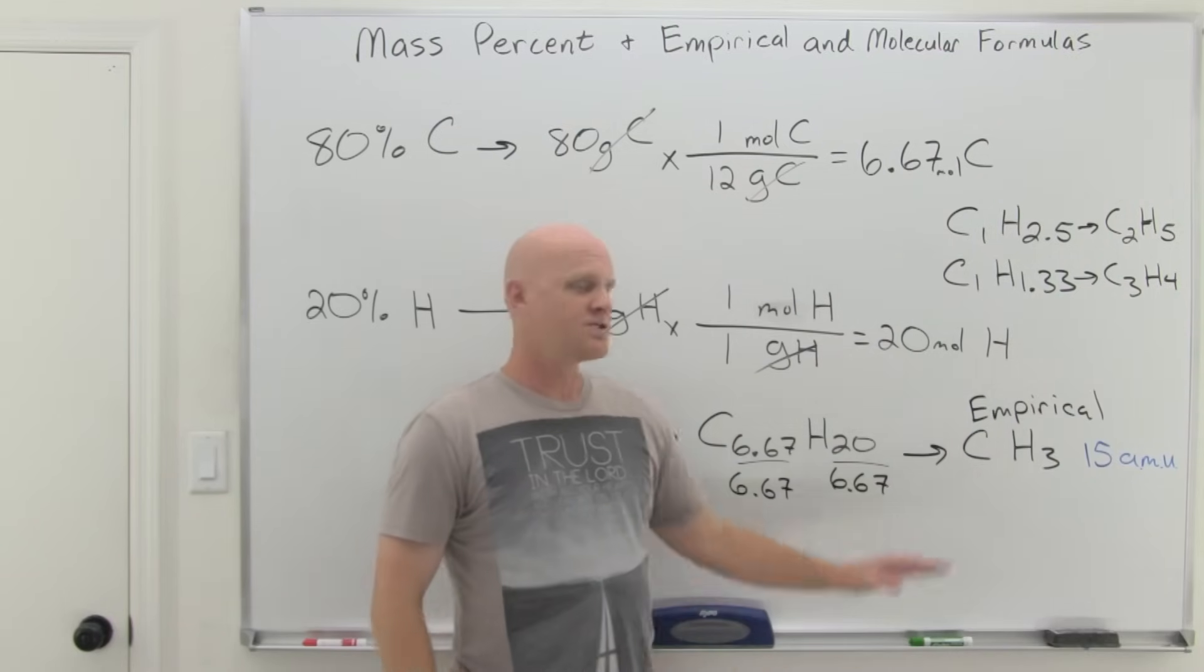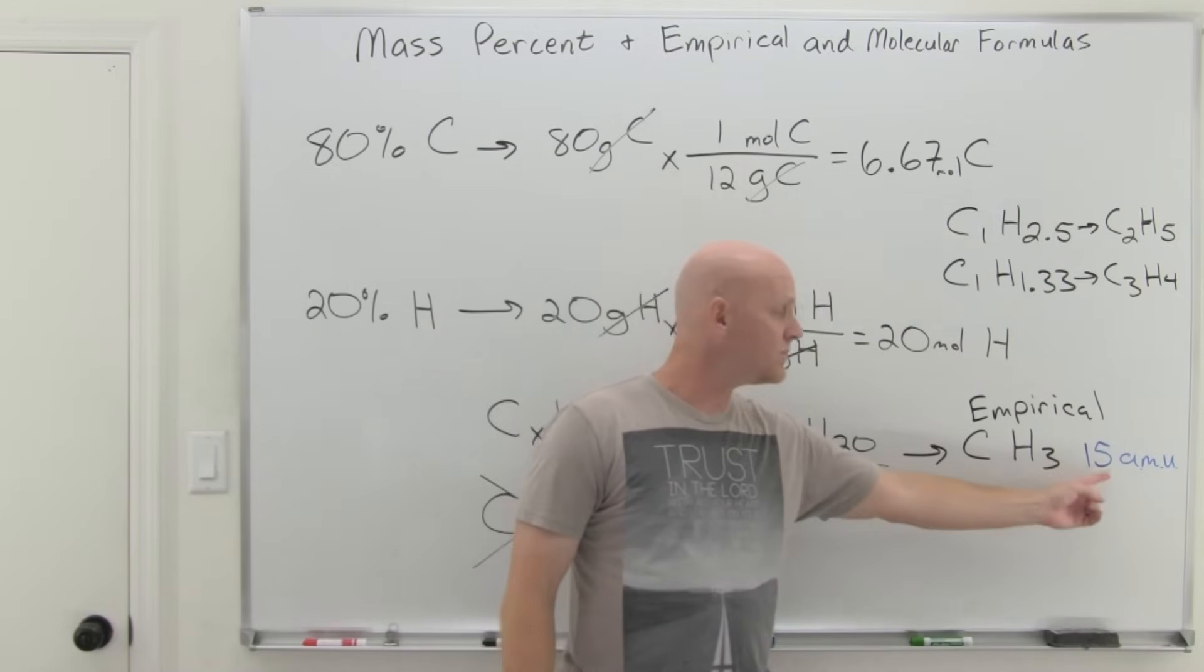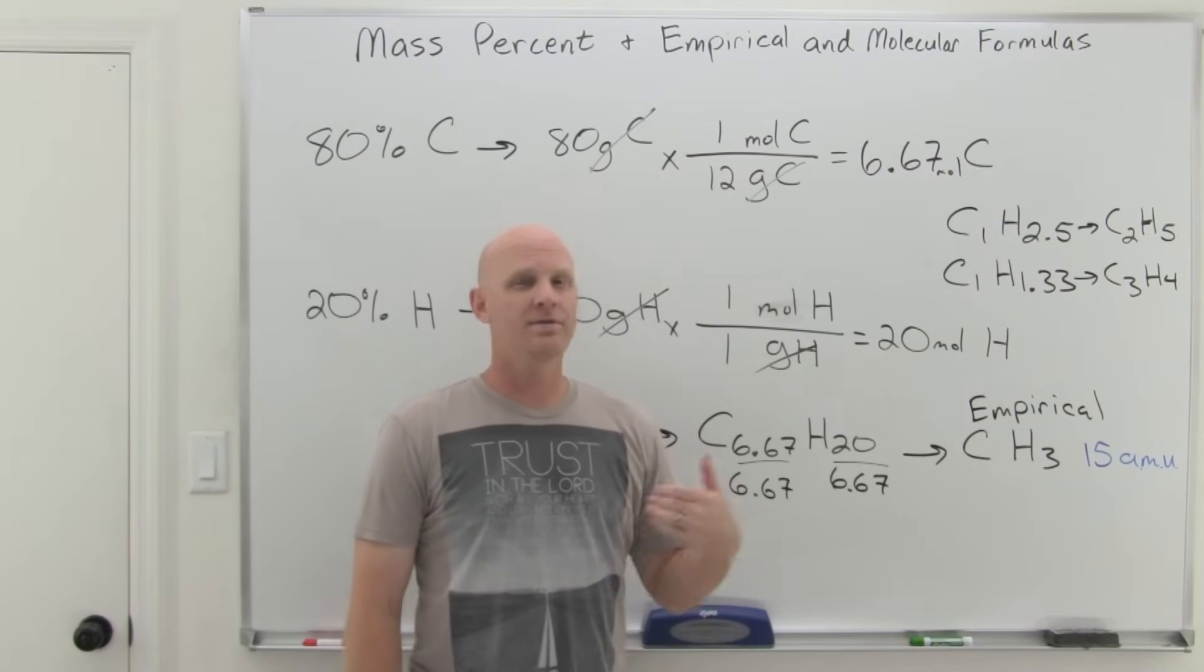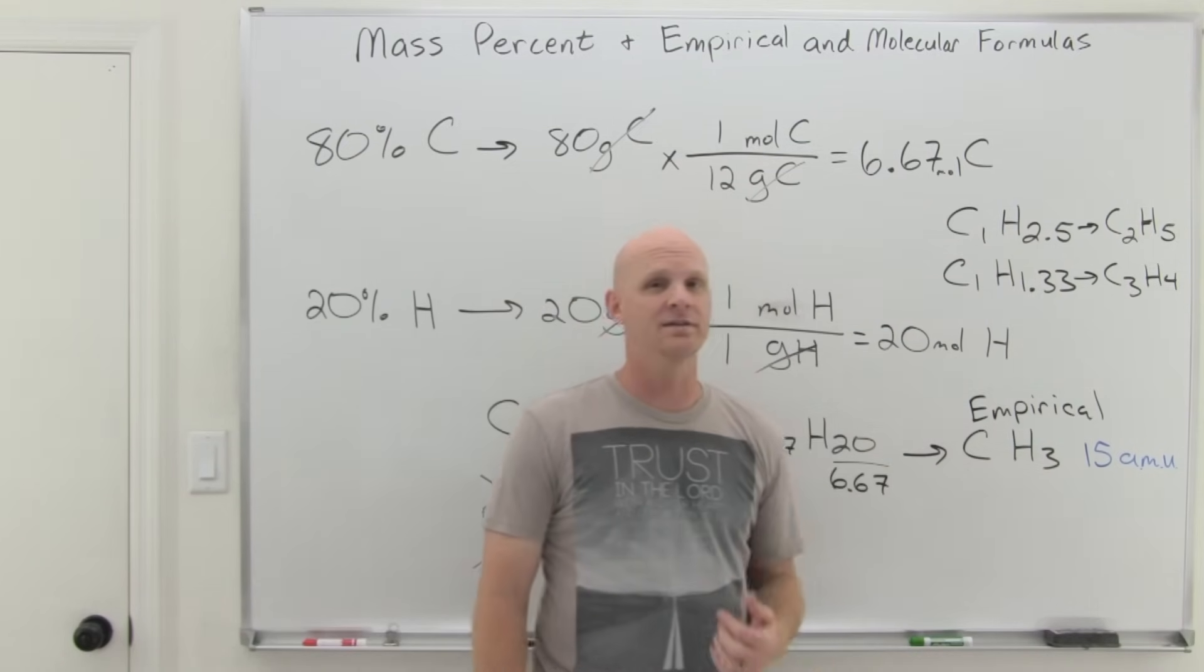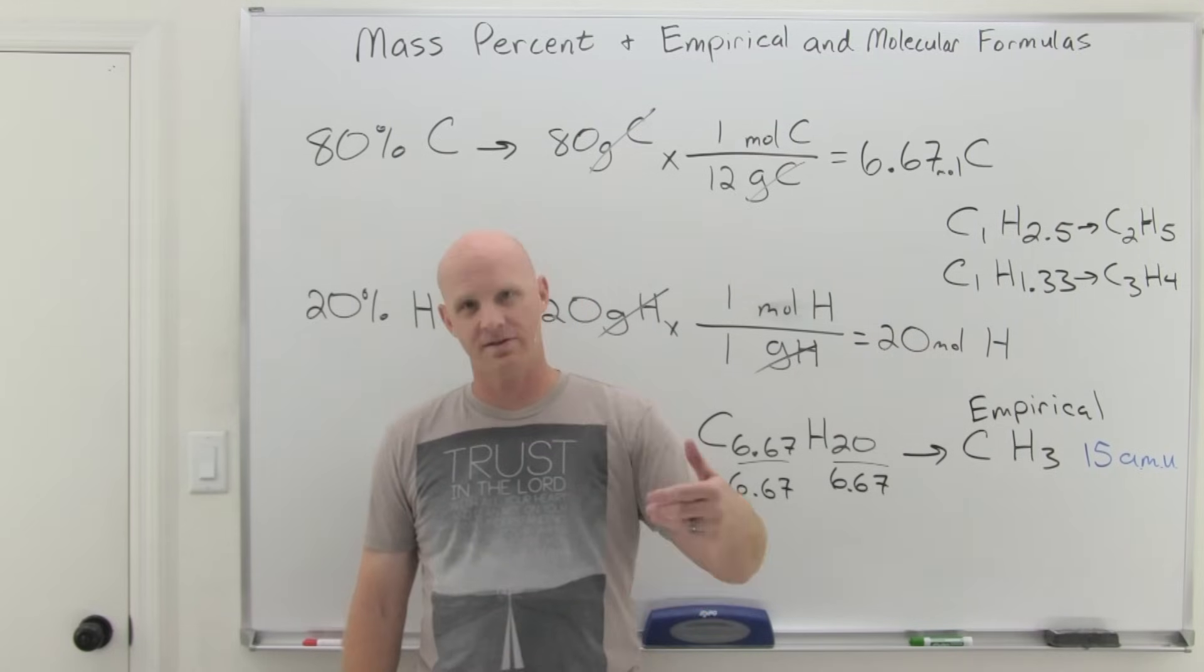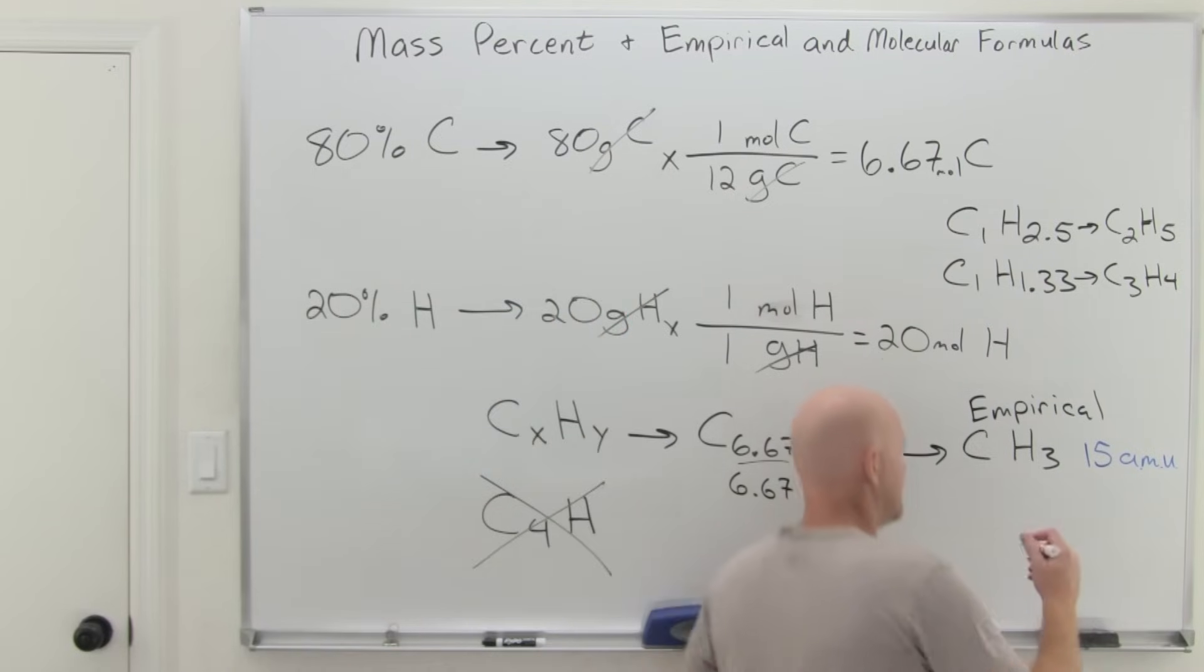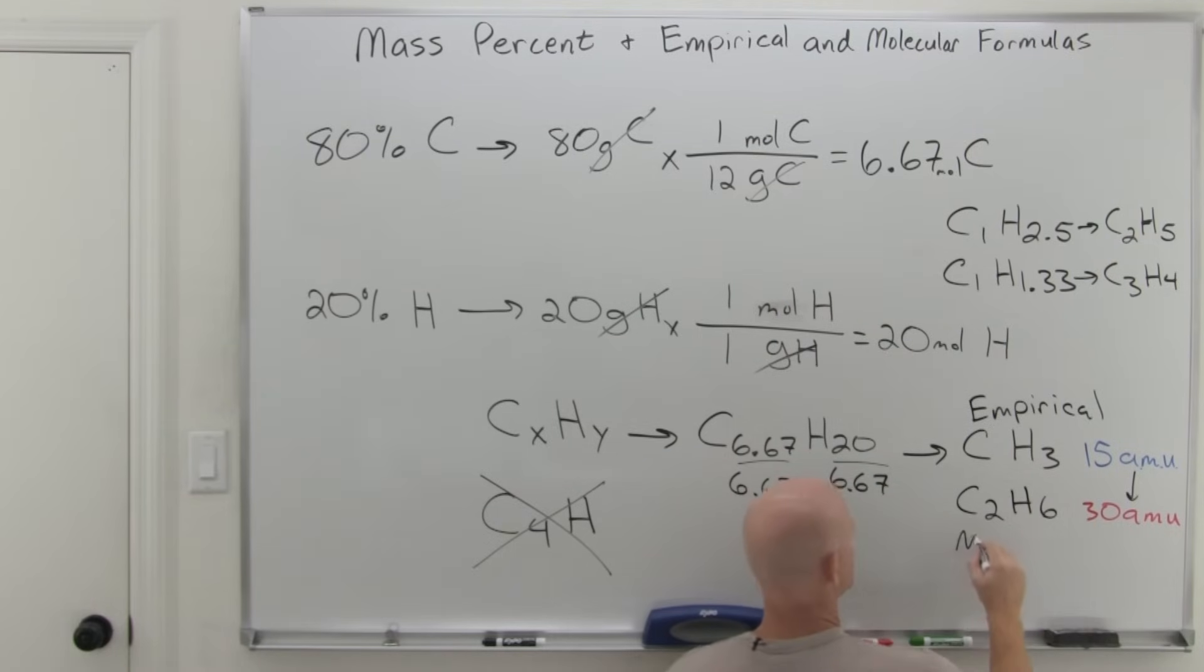One thing you have to realize is that when you start doing multiples, if you double the whole formula, that also doubles the weight. If you triple the whole formula, it would also triple the weight. And so whatever your molecular weight is going to be, it has to be a multiple of 15. It's got to be 15, 30, 45, 60, 75, et cetera. And it's going to be one of those. In this case, we're told that it is 30 AMUs. And so the question is then, well, how do I get from 15 to 30? Well, I've got to double the weight. And if I'm doubling the weight, that means I'm doubling the formula here as well. And so there indeed is our molecular formula, C2H6.